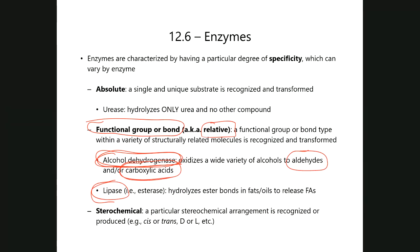There is also stereochemical specificity, where enzymes look for specific three-dimensional shapes or arrangements across a variety of different structures. For example, an enzyme might look for a cis or trans arrangement around an alkene or ring structure, or in carbohydrate metabolism it might look specifically for D-sugars versus L-sugars.